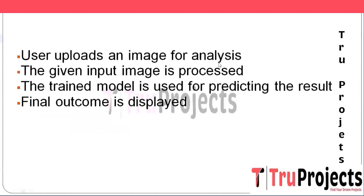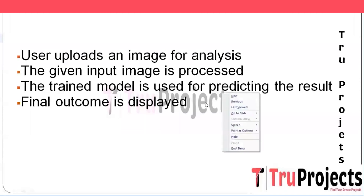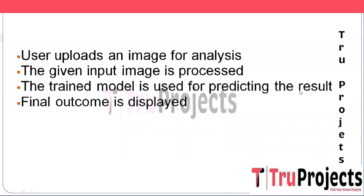Next, a user-friendly web interface is created using Flask, a popular Python web framework, allowing users to upload a brain image for analysis. The uploaded image is pre-processed in the same manner as the dataset images to standardize it for the CNN model. The pre-processed image is then passed through the trained CNN model for brain tumor classification and segmentation, predicting whether the tumor is benign or malignant and delineating the tumor boundary in the image.